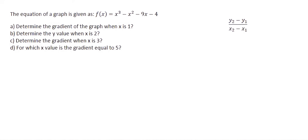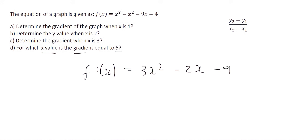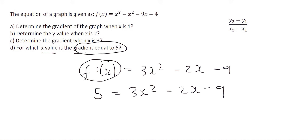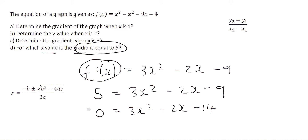Question D is quite a good one: what is the x value when the gradient is 5? We know that gradient is the first derivative. This time they haven't given us the x value, but they've told us the gradient is 5. So we can turn the first derivative expression into 5. This is a quadratic, so we take everything to one side and solve. You can typically use the quadratic formula — and by now I trust you know how to use it. Using the quadratic formula, you should get answers of 2.52 or negative 1.85.